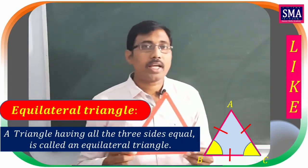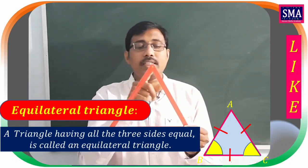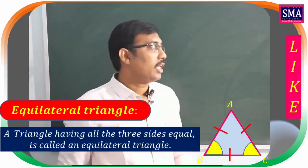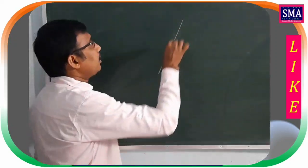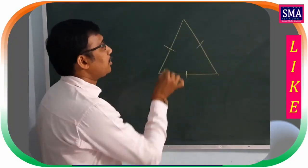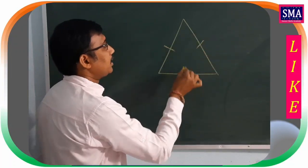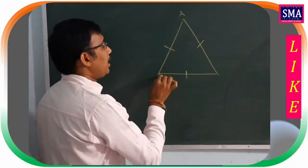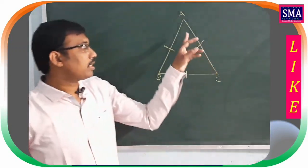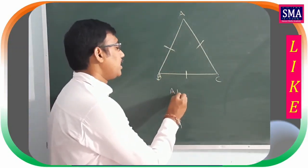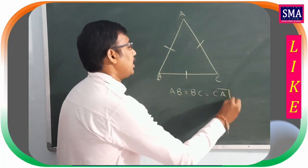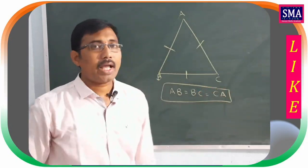An equilateral triangle means a triangle in which all three sides have equal measurements. In an equilateral triangle ABC, AB = BC = AC. The tick marks on the sides indicate that all sides are equal lengths.